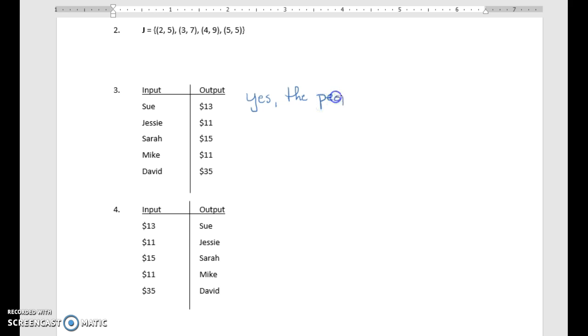The people do not repeat themselves. Now, since it is a function, we want to write this in function notation. Since these are people, we could probably use the letter p to represent the people or the names, or maybe you want to use n.